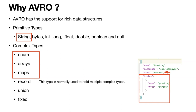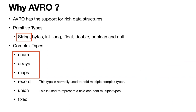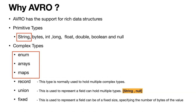The next type in Avro is the union type, which is used to represent that a particular field can hold multiple types. For example, a field can be a string or null — basically this type is used to represent an optional element. The next type is fixed, used to represent a field of fixed size specifying the number of bytes of the value. If you have experience with hashing algorithms, whose output is always a specific number of bytes, you can use the fixed type for that.